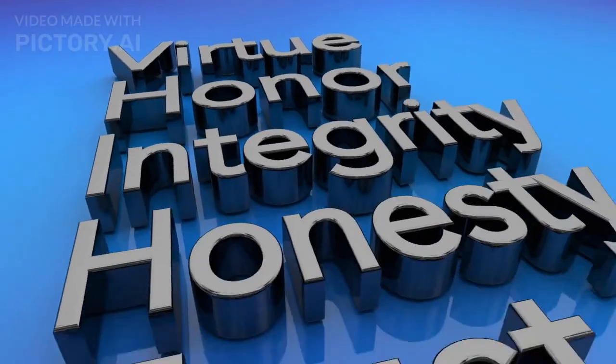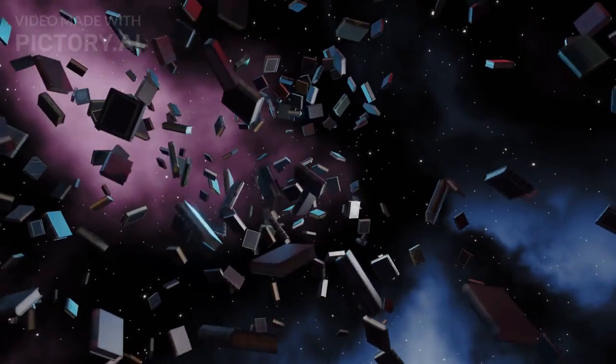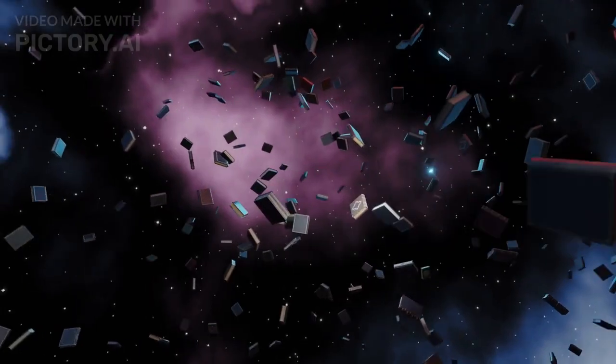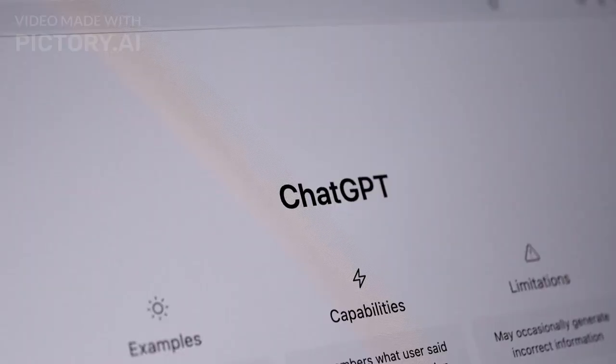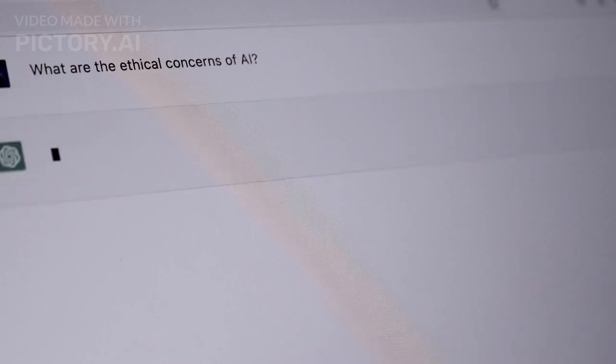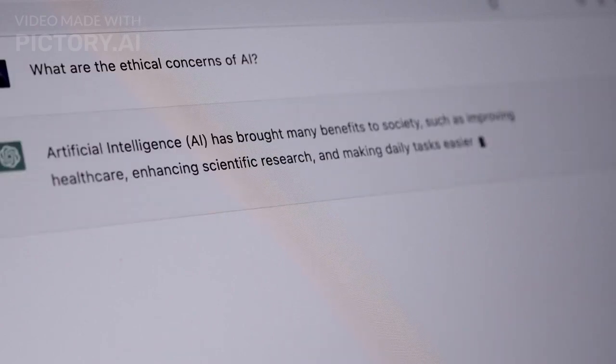Ethics and bias. With great power comes great responsibility. As AI systems learn from human-generated data, they can inadvertently inherit biases present in that data. Ensuring fairness, transparency, and ethical use of AI is crucial to avoiding biased outcomes and reinforcing harmful stereotypes.